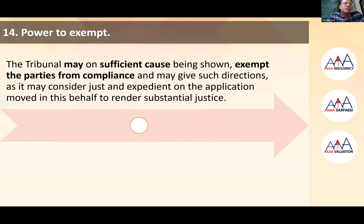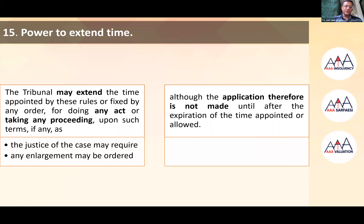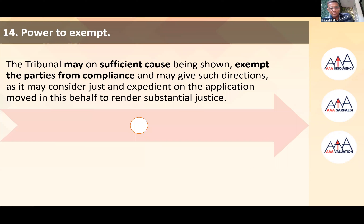Moving to Rule 14: the tribunal may, on sufficient cause being shown, exempt the parties from compliance and may give such directions as it may consider just and expedient, on the application moved in this behalf to render substantial justice. Any exemption that needs to be sought from the adjudicating authority — for example, exemptions from any kind of compliance — requires that an application be moved in this behalf. Without an application, the power to exempt does not exist.